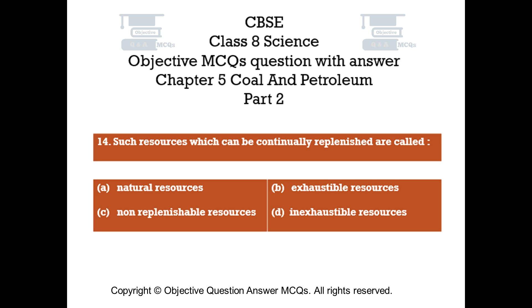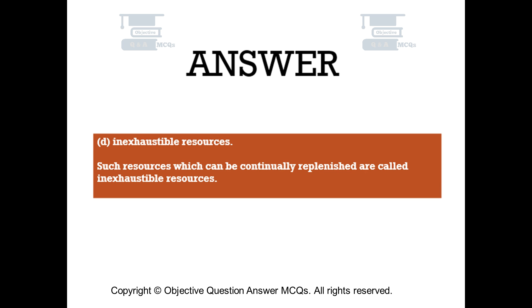Question number 14: Such resources which can be continually replenished are called — Option A: Natural resources. Option B: Exhaustible resources. Option C: Non-replenishable resources. Option D: Inexhaustible resources. The right answer is Option D: Inexhaustible resources. Such resources which can be continually replenished are called inexhaustible resources.